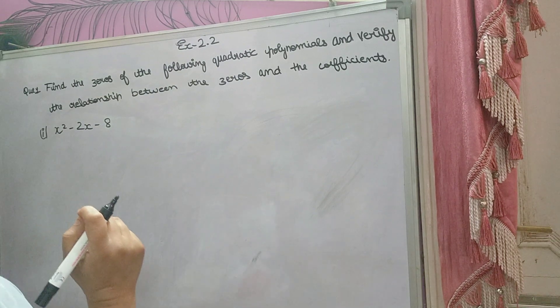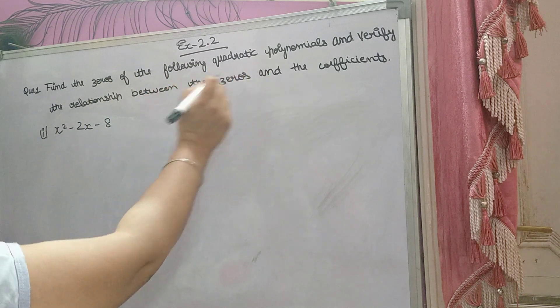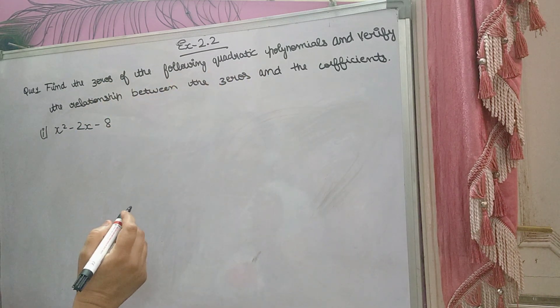Hey students, welcome back to your favorite channel Math Helpers. Exercise 2.2, question number one: Find the zeros of the following quadratic polynomials and verify the relation between the zeros and the coefficients.